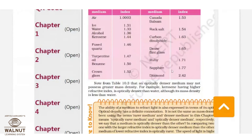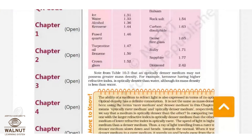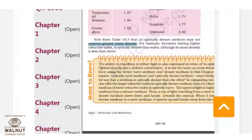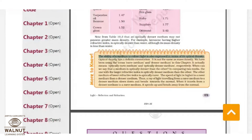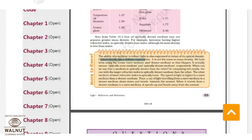From this table, an optically denser medium may not possess a greater mass density. The ability of a medium to refract light is expressed in terms of its optical density. Optical density has its own definition — it is a different term with a definite connotation. When we refer to density in optics, it does not mean it is related to mass. In the case of lenses, optical density is a different term altogether.